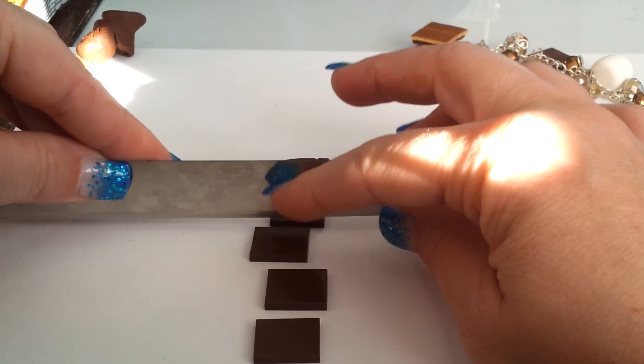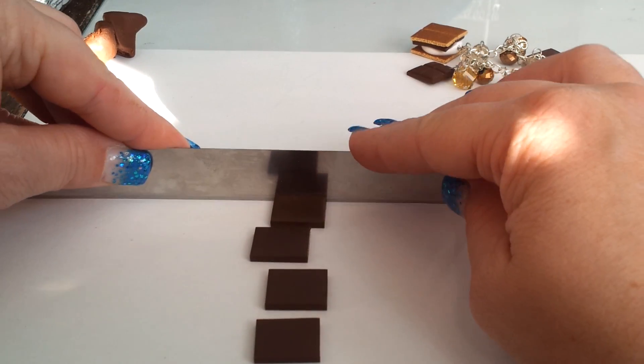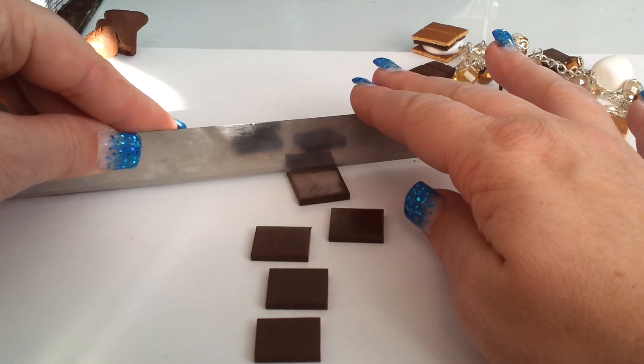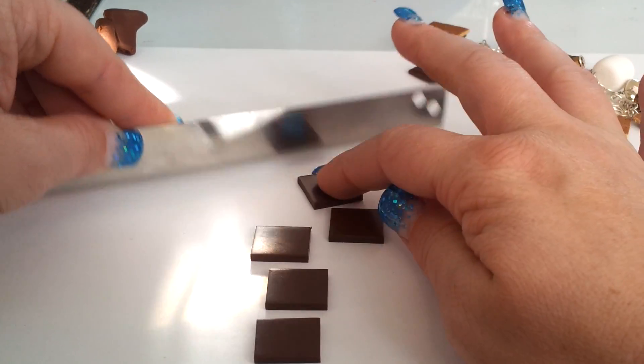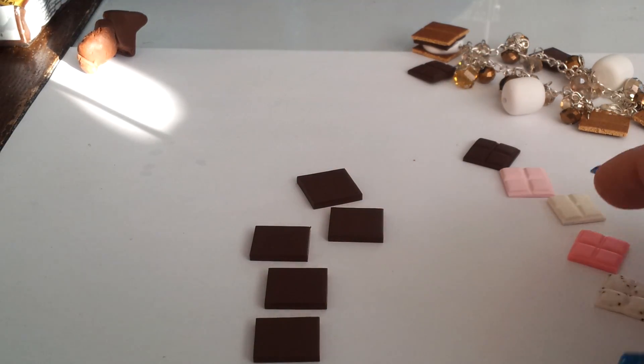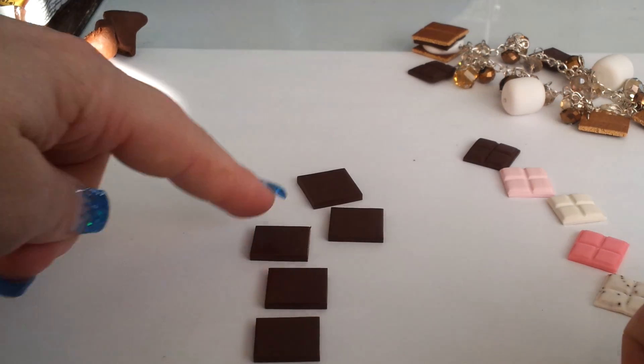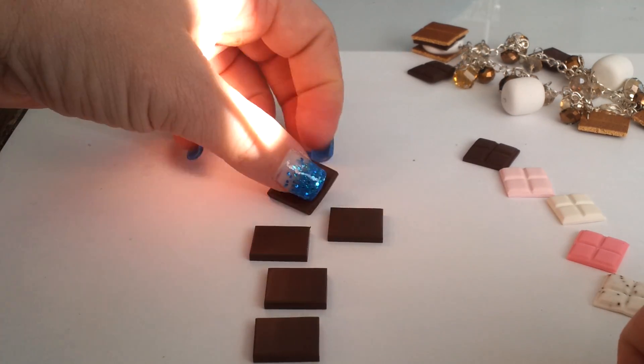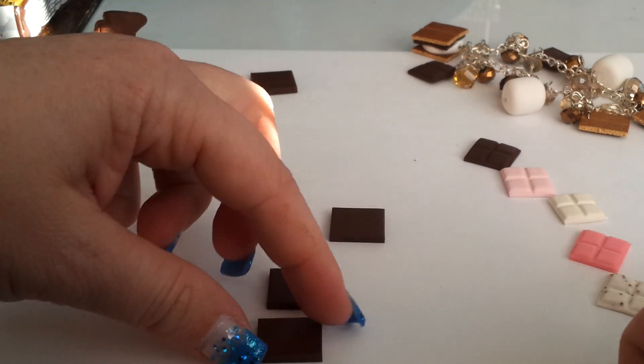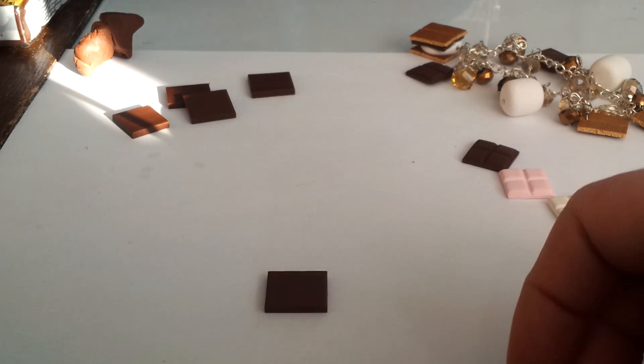They don't have to be absolutely perfect because you'll be trimming the edges anyway when you're all done. But as you can see here, that little strip was enough to make five different chocolate squares. So here we go.